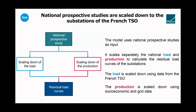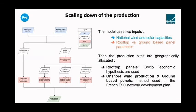The model takes national prospective studies and applies a scaling-down method to the substations of the French TSO. The model scales separately the national load and production and calculates the residual load curves of each substation. For the load scaling, it tries to keep the characteristics of historical load curves such as thermal sensitivity, using historical data from the TSO. For the production, the scaling-down uses socio-economic and grid data. By combining both, we can calculate the residual load curves of each substation.